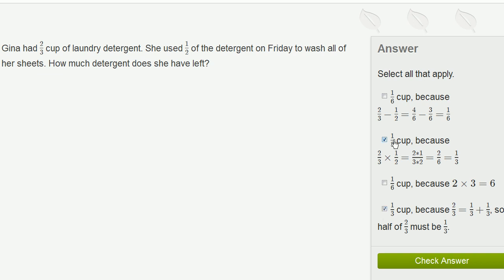These are both completely reasonable ways to getting the right answer, that Gina has 1 third. She used 1 third of a cup of laundry detergent, and she has 1 third left.